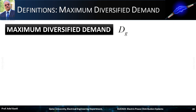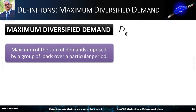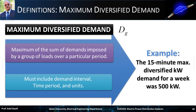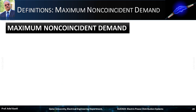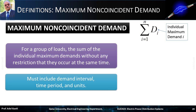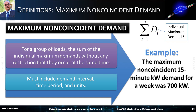Next, we will define the maximum diversified demand. It is the maximum of the sum of demands imposed by a group of loads over a particular time period. It must include demand interval, time period, and units. For example, the 15-minute maximum diversified kilowatt demand for a week was 500 kilowatts. Next, we will define the maximum non-coincident demand. It is defined for a group of loads as the sum of the individual maximum demands without any restriction that they occur at the same time. For example, the maximum non-coincident 15-minute kilowatt demand for a week was 700 kilowatts.